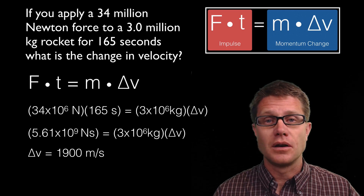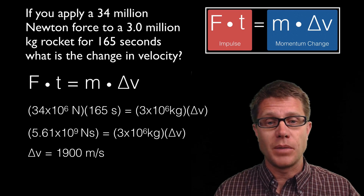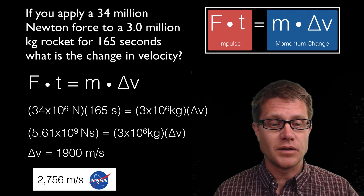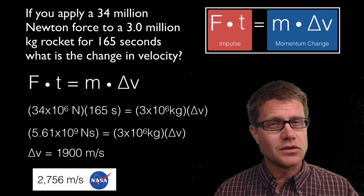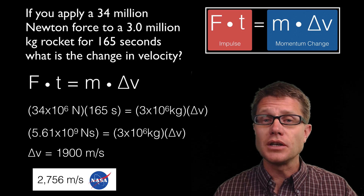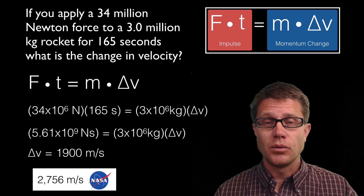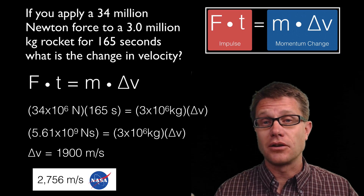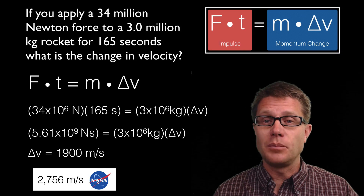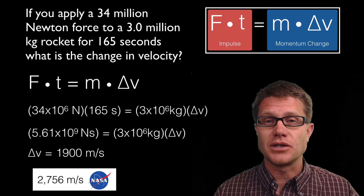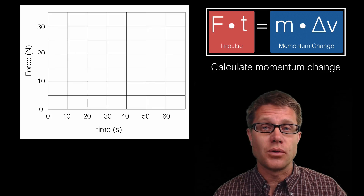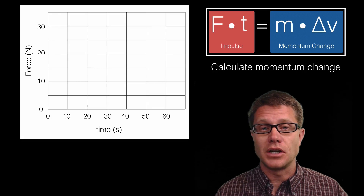When I looked up what NASA released as the actual change in velocity during that time, they have a value of 2,700 meters per second. Where is the difference? As that rocket is firing, it is using up rocket fuel, so the mass is changing — getting lighter and lighter. That makes the change in velocity greater. In AP Physics, they will only ask you questions where the mass remains constant.